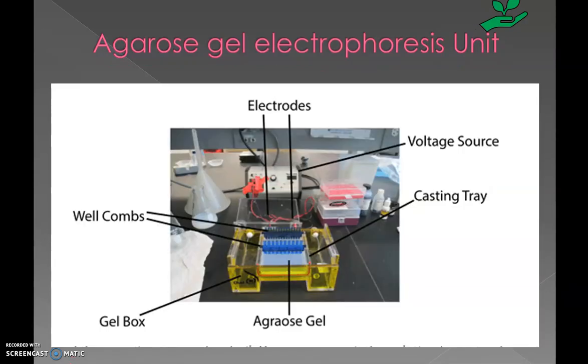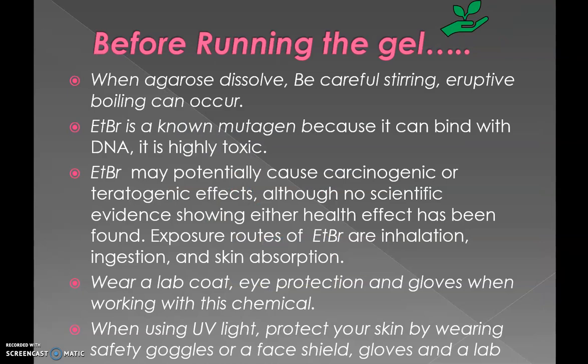The main unit in which we run our DNA sample is the gel electrophoresis unit. It contains a gel tank, gel casting tray, comb, voltage source, and electrodes — one positive and one negative. Black represents the negative electrode and red represents the positive electrode. We must be careful when agarose dissolves, as eruptive boiling can occur. Ethidium bromide is a highly mutagenic and toxic compound, so we should wear a lab coat and eye protection such as spectacles, and gloves should be used while working with these chemicals and running the gel.